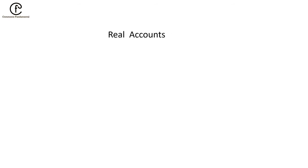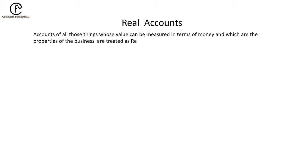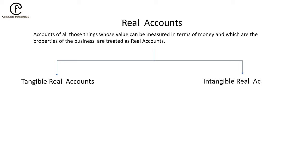Accounts of all those things whose value can be measured in terms of money and which are the property of the business are treated as Real Accounts. Assets are the property of the business and can be measured in terms of money. Real accounts are further divided into two parts: Tangible Real Accounts and Intangible Real Accounts.